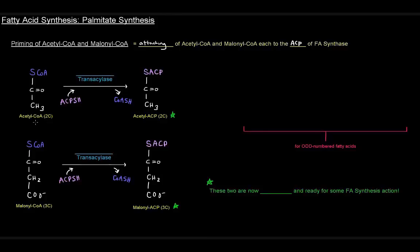The two substrates we're working with are acetyl-CoA and malonyl-CoA, both attached via thioester linkages. All we're going to do is replace that thioester linkage to coenzyme A with a thioester linkage to the acyl carrier protein. So we take acetyl-CoA and turn it into acetyl-ACP, freeing the coenzyme A, and now the acetyl group is attached to the ACP. That reaction is catalyzed by acetyl transacylase, because it moves the acetyl group over to the acyl carrier protein.